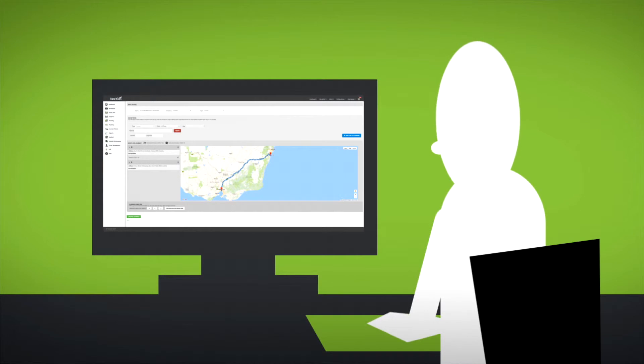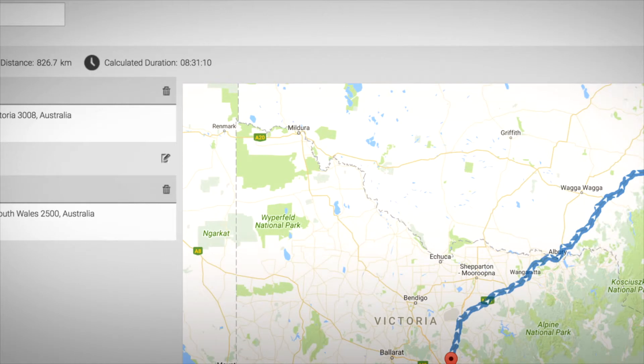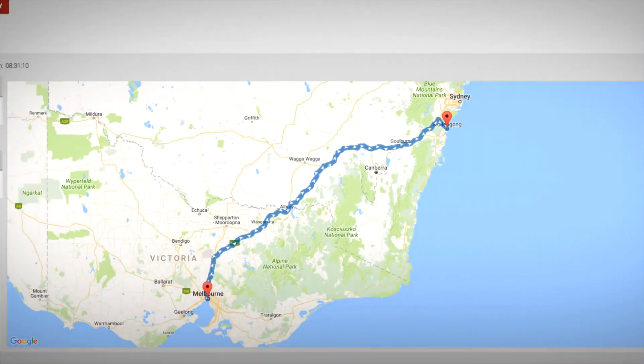SmartNav then identifies relevant location and regulatory information in any jurisdiction, such as the crane networks, HML or B double networks.